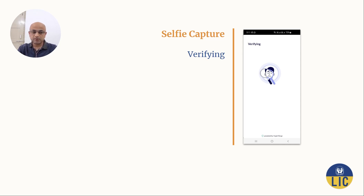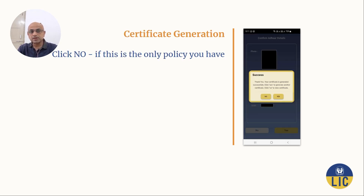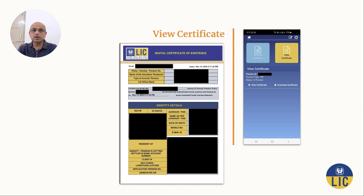Once you click the capture button, it starts to verify your photo, likely checking against your Aadhaar data for face matching. A dialogue then indicates successful certificate generation. It also asks whether you have more policies to generate a life certificate for. If not, click No — it goes back to the policy listing screen, which will now show status as 'In Progress' with a 'View Certificate' link. Click it to see the generated digital life certificate. It may take a couple of weeks for the status to change from 'In Progress' to 'Life Certificate Approved.'